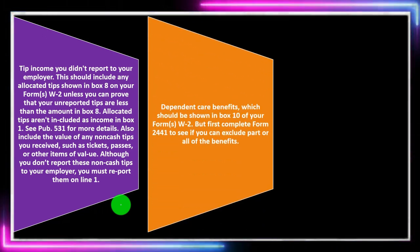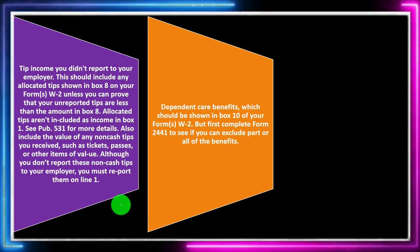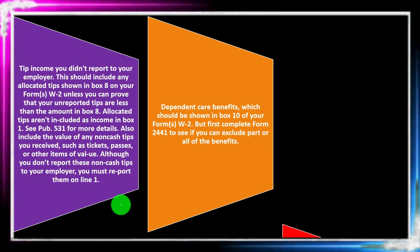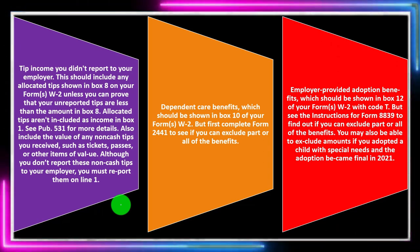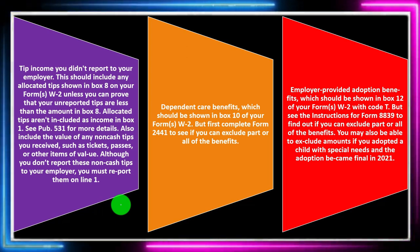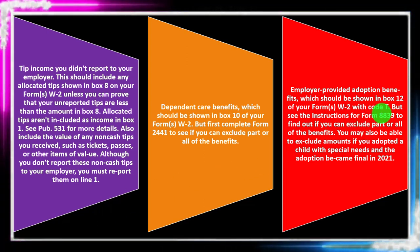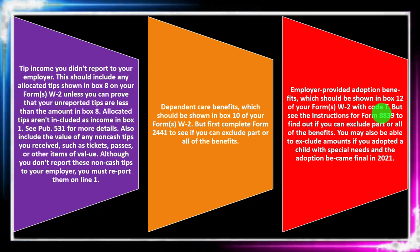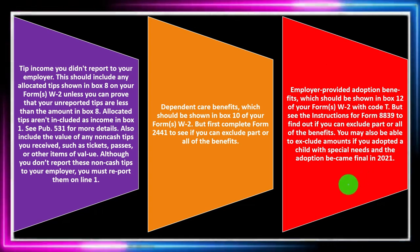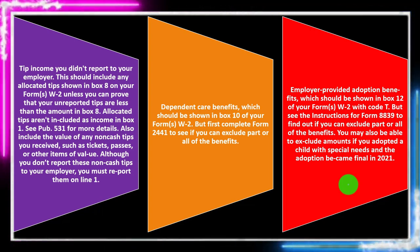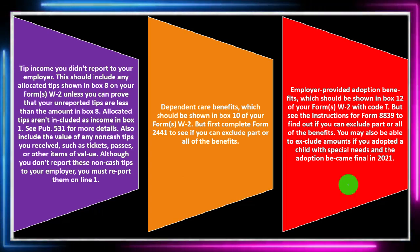Dependent care benefits shown in Box 10 of your W-2 should be reported, but first complete Form 2441 to see if you can exclude part or all of the benefits. Employer-provided adoption benefits should be shown in Box 12 with a code T. If you see code T in Box 12, look at the instructions to understand what to do. See Form 8839 instructions to find out if you can exclude part or all of those benefits. You may also be able to exclude amounts if you adopted a child with special needs and the adoption became final in 2021.